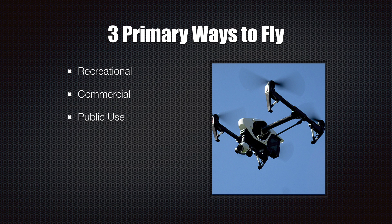The first thing I want to cover is the three primary categories that the FAA is going to allow you to fly. Those three categories are recreational, commercial, and public use. We need to understand those three different categories because you cannot mix and match those categories of flight during an operation. If you take off and you're flying under a commercial operation, you can't switch over to recreational mid-flight. You have to land the aircraft, then decide you want to fly recreationally, and then fly. That's pretty important because things can get really confusing if you don't understand that.